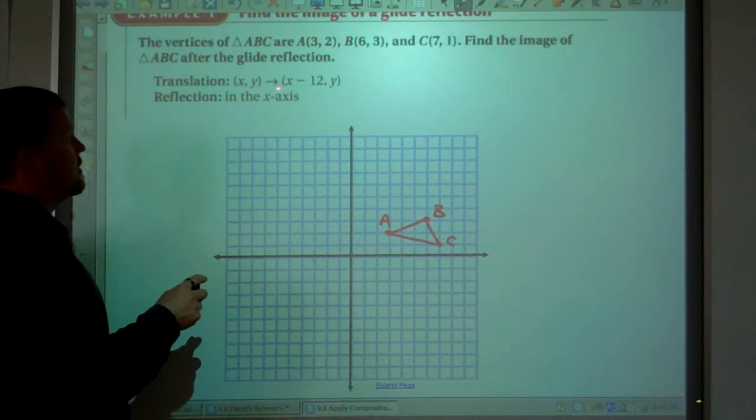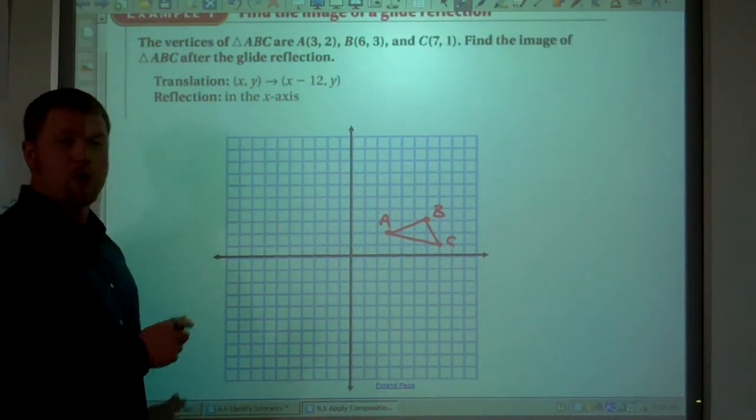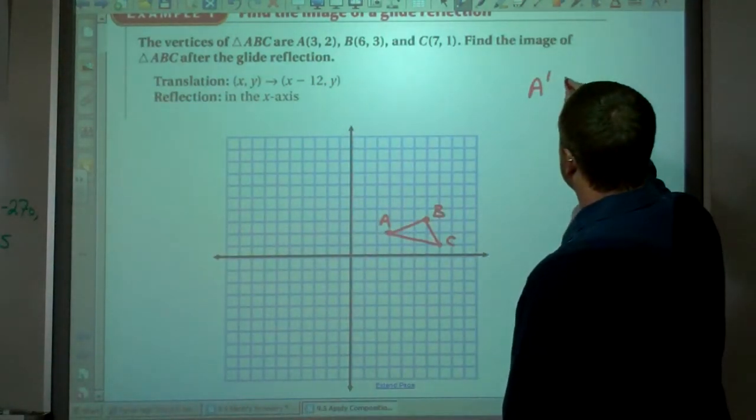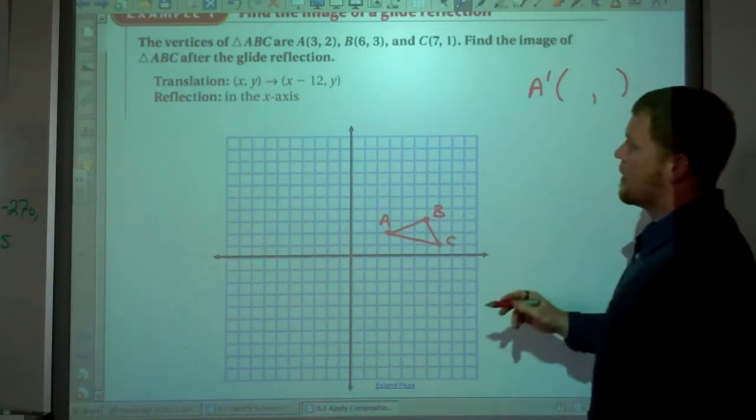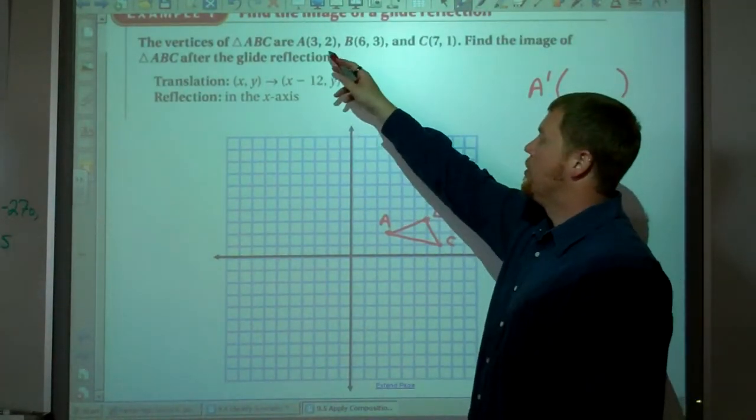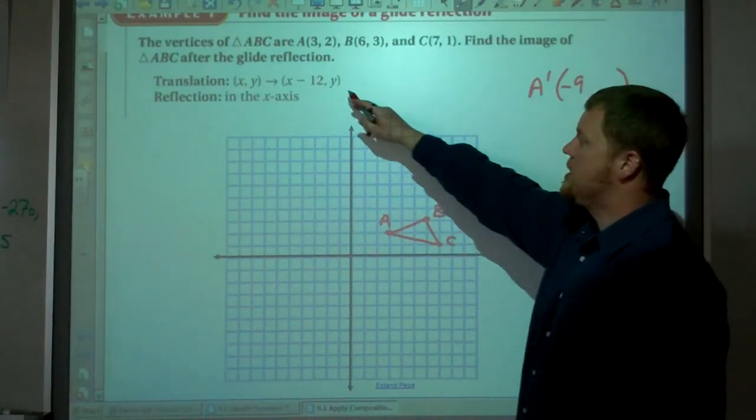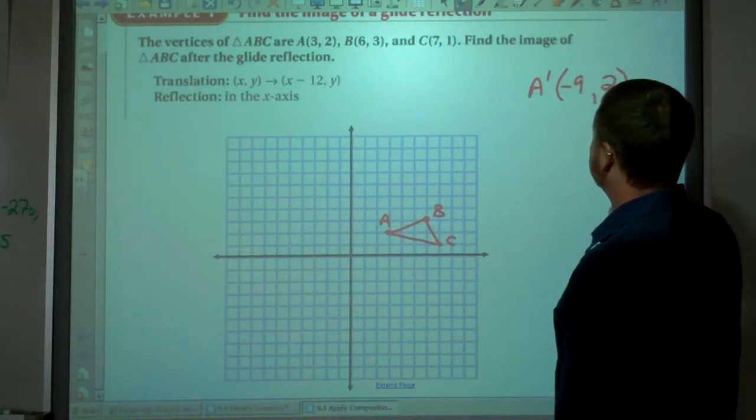Now we are going to translate it by the transformation (x minus 12, y). Alright, so A prime is x minus 12. So 3 minus 12, that's negative 9. And then y stays the same, so 2.